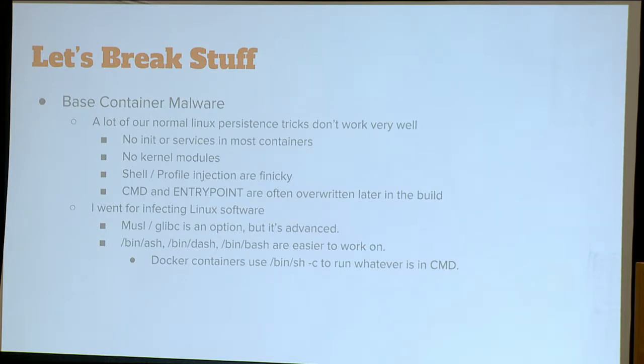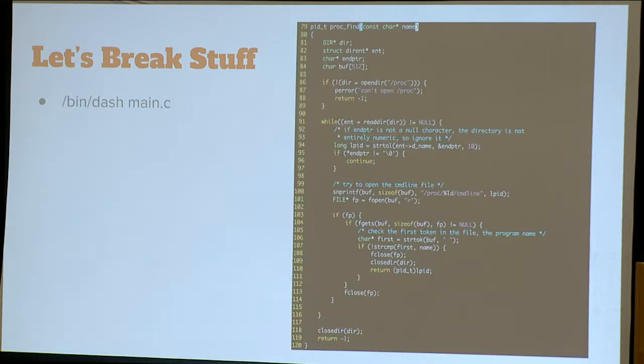Infecting Linux software sounds hard — it's not hard. Musl and glibc are options — musl being a libc alternative used in Alpine, which is a very popular container base. You could identify a part of that library that always gets loaded and put your stuff in there. I just went for the shell binary because I know it runs. /bin/ash is run in Alpine, /bin/dash is what Ubuntu uses — there's actually a link from /bin/sh to /bin/dash. And it's important to note that Docker containers use bin/sh -c command to run whatever is in CMD. So it's going to run sh — it has to. It also runs it during the build.